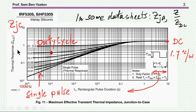This could be either junction to case or junction to air — there are different charts that vendors provide. This parameter here is duty cycle. For example, a duty cycle of 0.2 — if the pulse length is 100 microseconds with a duty cycle of 0.2, then the equivalent impedance is about 0.4 degrees centigrade per watt, as compared to 1.7 for the DC value.